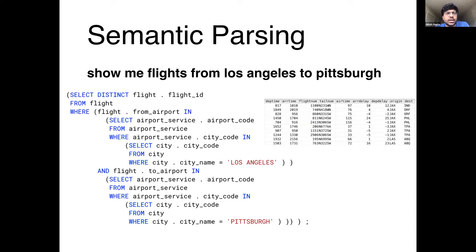Related work on semantic parsing maps compositional natural language utterances to formal meaning representations — for example, an SQL query executed against a structured knowledge base to get the answer. One issue applying this to our problem is that we deal with unstructured data — paragraphs of text — and we don't know how to execute structured representations over unstructured context.